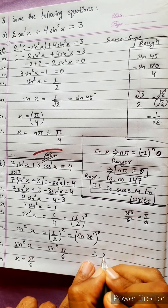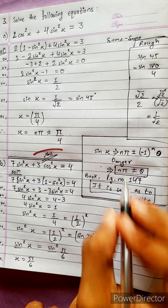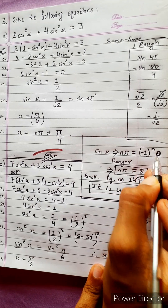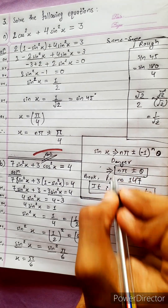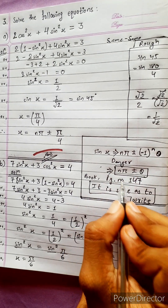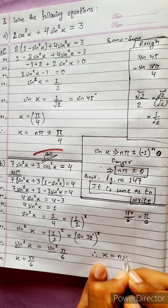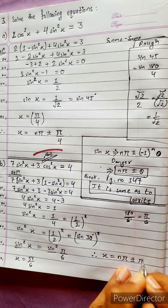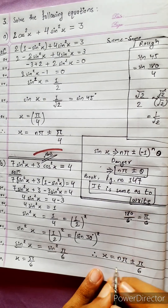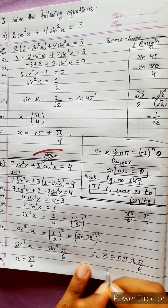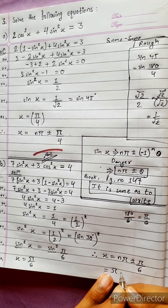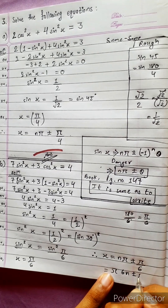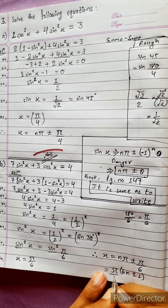The general equation is x equals n pi plus or minus (-1)^n theta. Using the appropriate formula, x equals n pi plus or minus pi/6, which simplifies to (6n plus or minus 1) divided by 6 times pi.